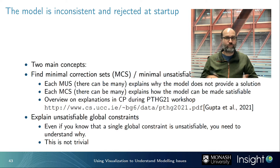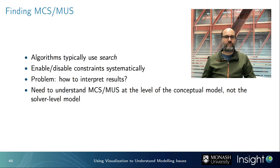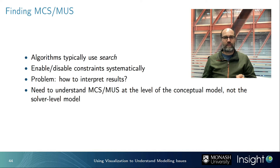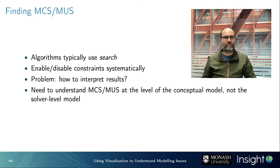Algorithms for computing MCSs and MUSs are typically based on search — for example, QuickExplain or Marco — which enable and disable constraints systematically to find minimal unsatisfiable sets. The problem is interpreting results, because it's not useful to be told that 100 basic solver-level constraints are unsatisfiable together. We need to understand unsatisfiability at the level of the conceptual model we wrote, and ideally translate it into language end users can understand.